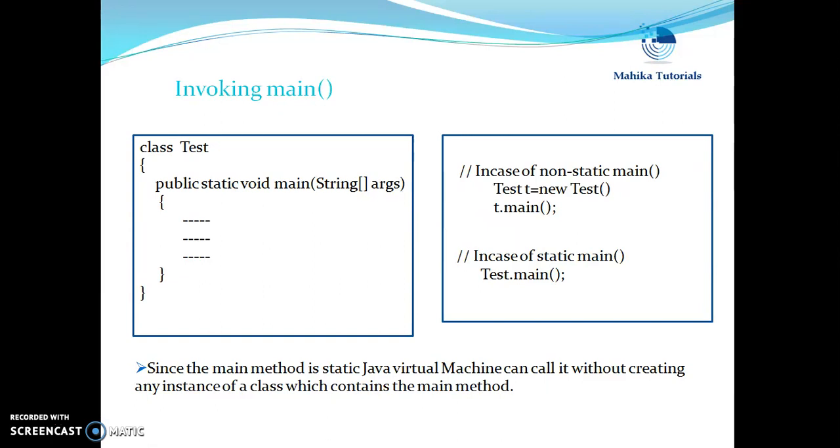So had it not been static, what was required to be done by JVM? If the main method was non-static, then first an instance was required to be created by JVM for our class and then with that instance this main method could be called.